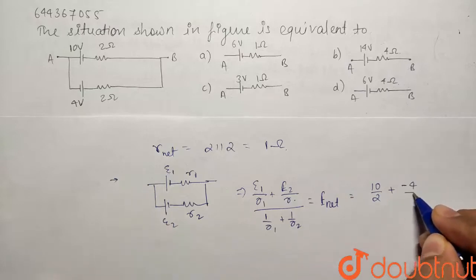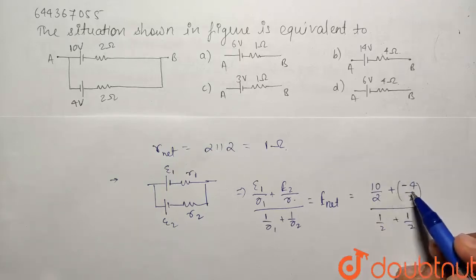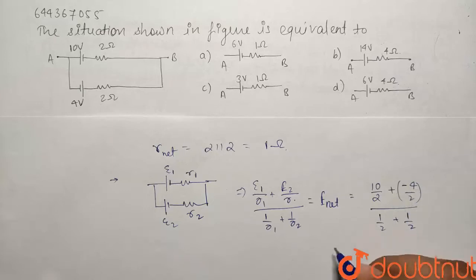So it will be minus 4 divided by 2 upon 1 by 2 plus 1 by 2. So if we simplify what we get, this becomes 5, this becomes minus 2, and this will become 1. So our E net comes out to be equal to 3 volts.